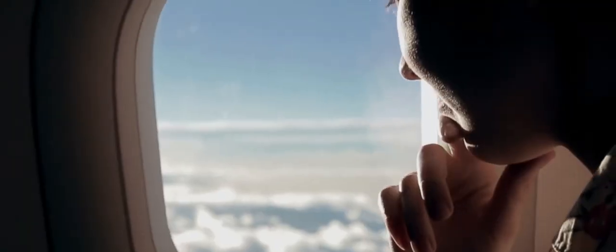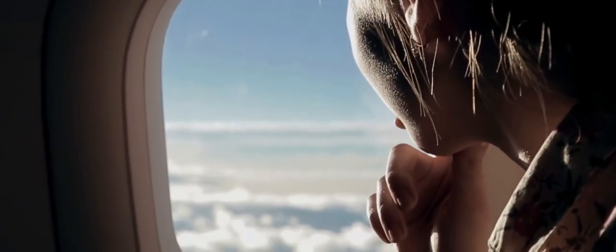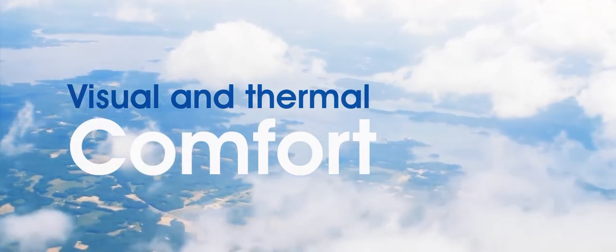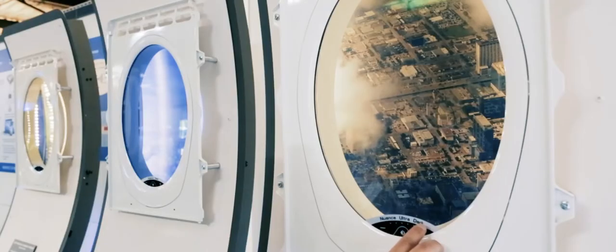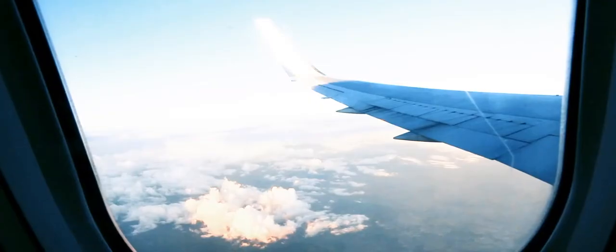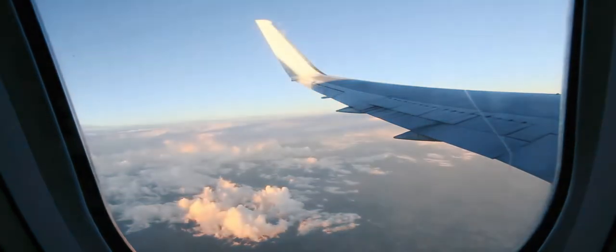Vision Systems' dimmable windows help you enhance your passenger travelling experience by improving visual and thermal comfort. The passengers can dim their window from clear to dark and any level in between to be protected from sunlight, glare and heat while enjoying the view.